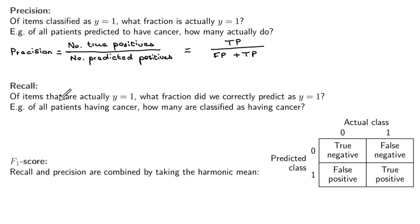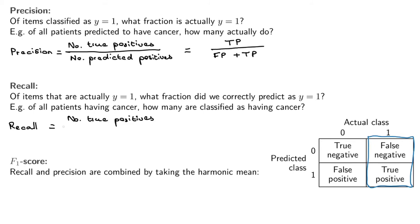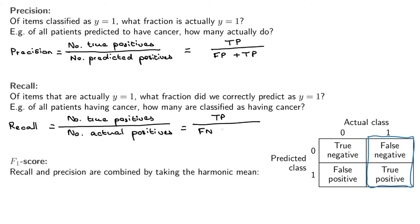Recall asks: of the items that are actually positive, what fraction did we correctly predict as positive? In our cancer example: of all the patients actually having cancer, how many did we correctly classify as having cancer? That means we're looking at the actual-positive column in the confusion matrix. Recall equals the number of true positives divided by the number of actual positives - that is, true positives divided by false negatives plus true positives.